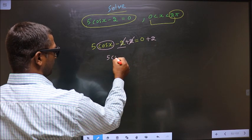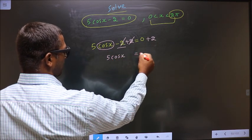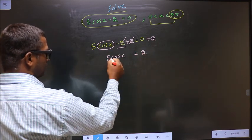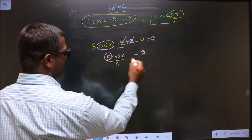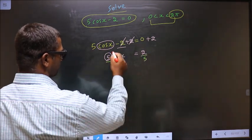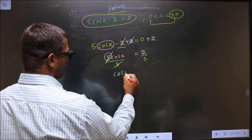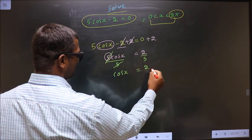So we get 5 cos x equal to 2. Now to remove this 5, you divide by 5 on both sides. So now I get cos x equal to 2 by 5.